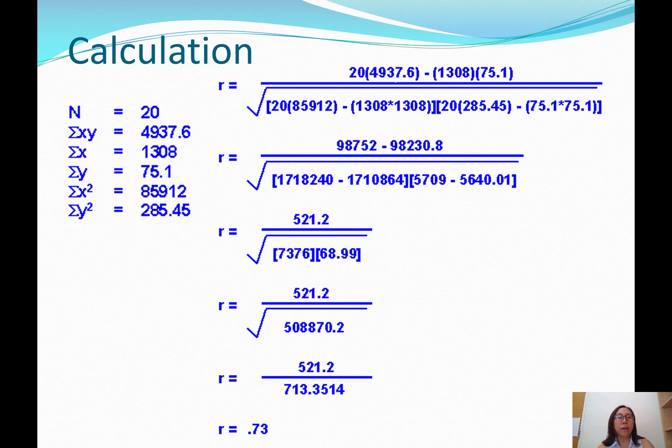Here at the bottom, you have all these totals that the formula requires. And of course, n is 20. There are 20 people in this data. A summary information is listed here on the left side, and we're going to see if we can plug in the numbers into the formula we read earlier. So n is 20, and then 4937.6 is the sum of xy, minus the sum of x of 1308, and the sum of y of 75.1, all divided by the square root of, and then in the two sets of brackets, you have n of 20 times the sum of x squared. That's 85912 minus the sum of x squared. And I spelled it out as 1308 times 1308. That's in the first set of brackets. In the second set, you have n of 20 times the sum of y squared minus the sum or sum of y. That's 75.1 squared, or times 75.1. So all the numbers are plugged in now.